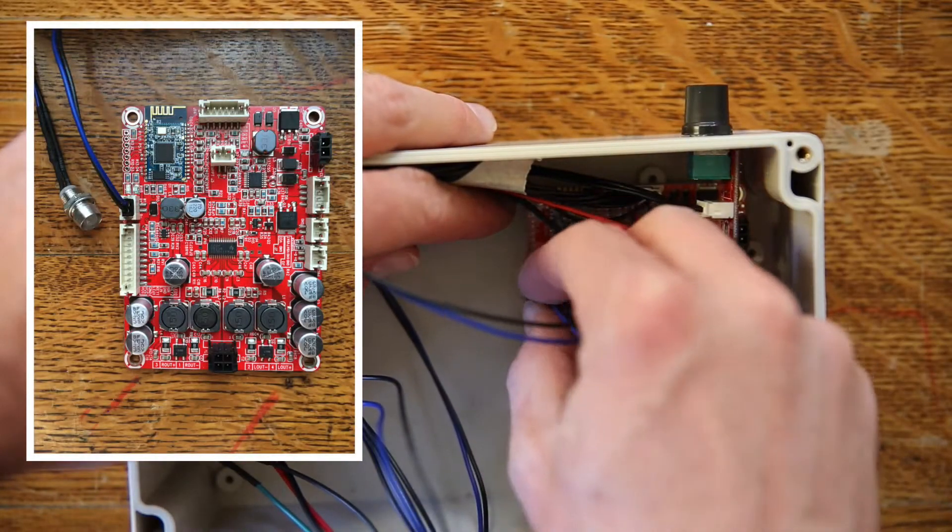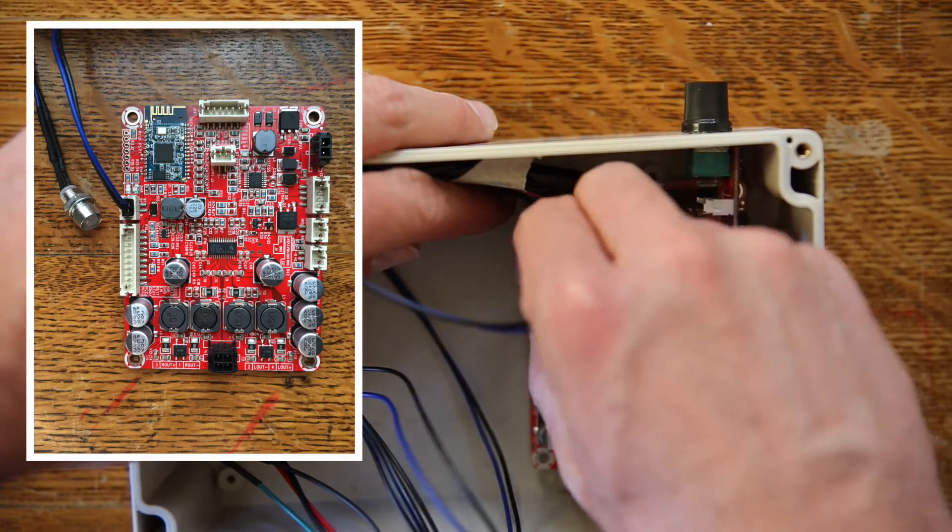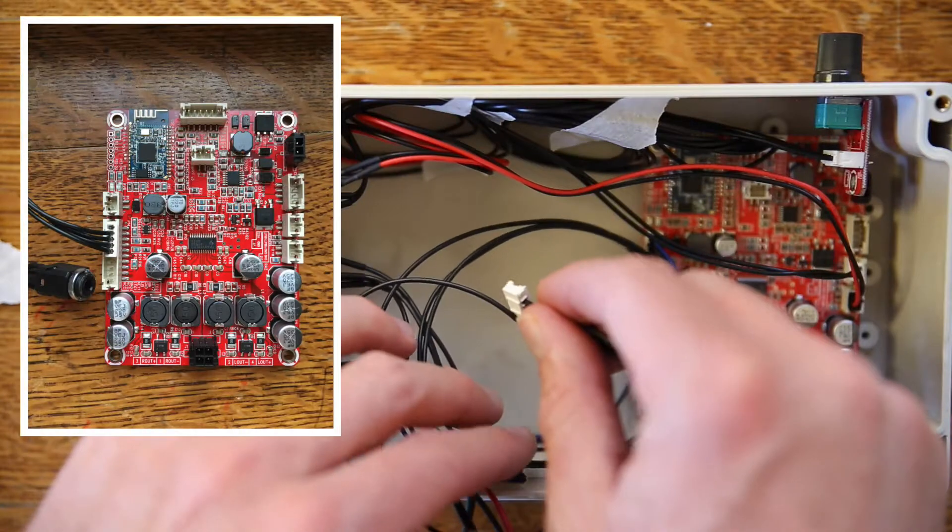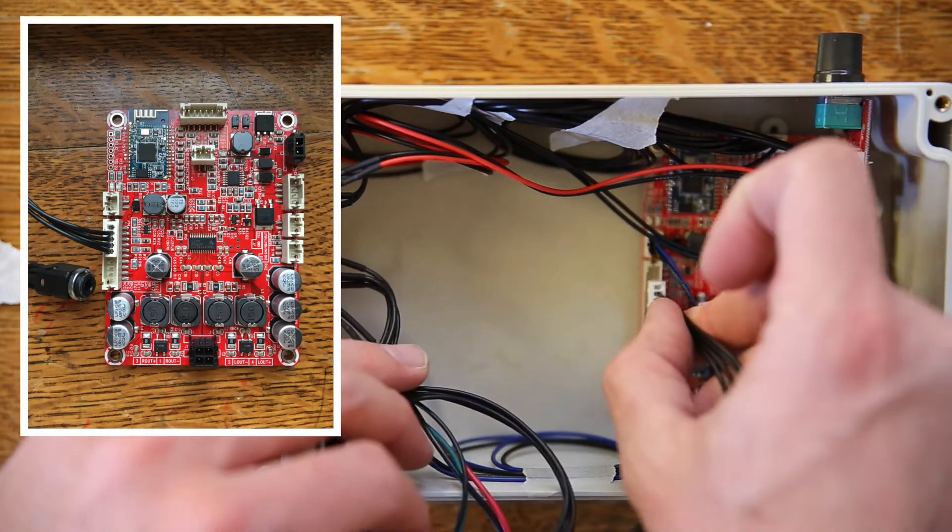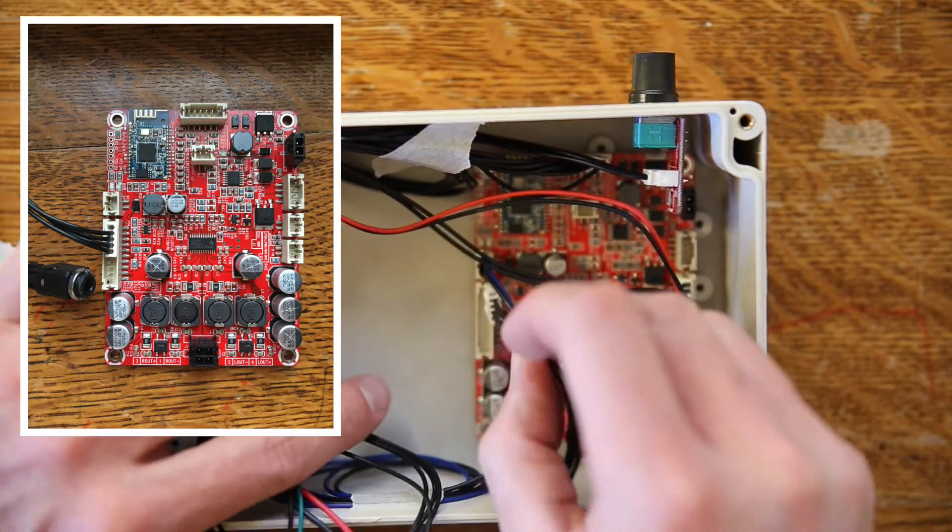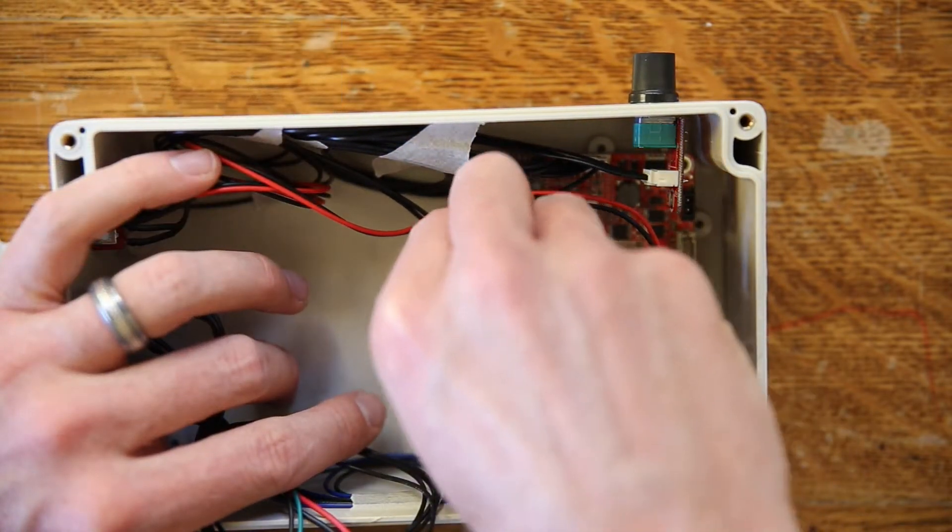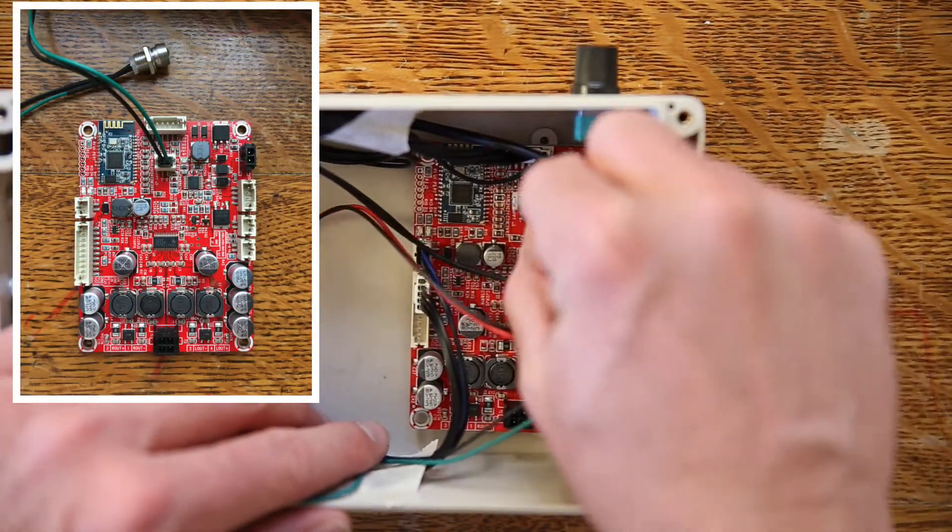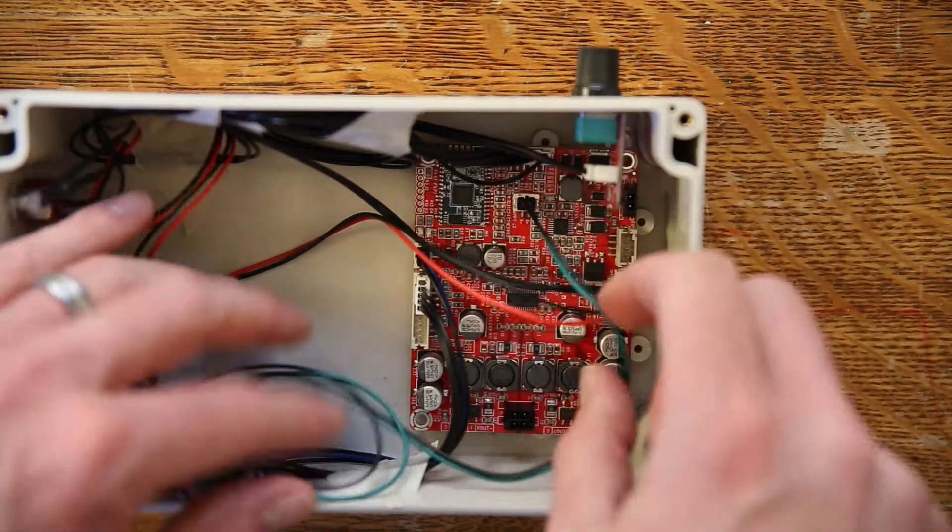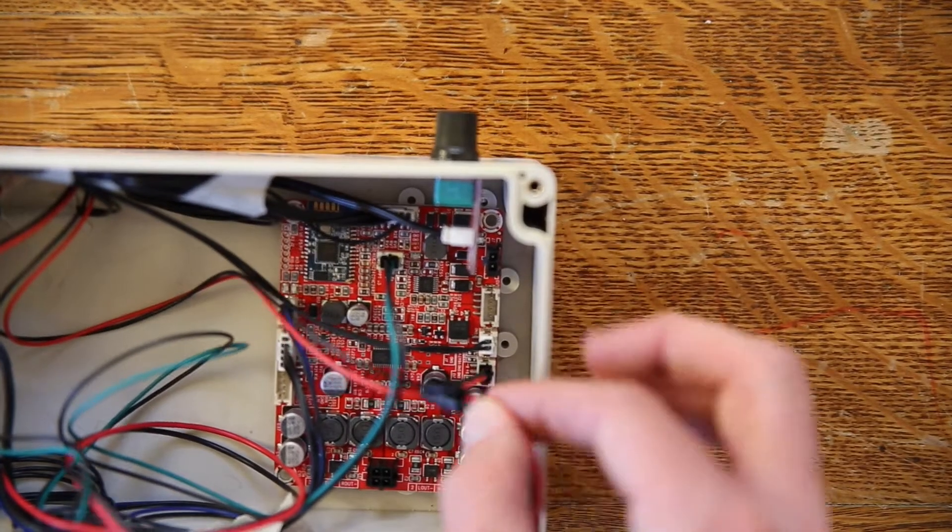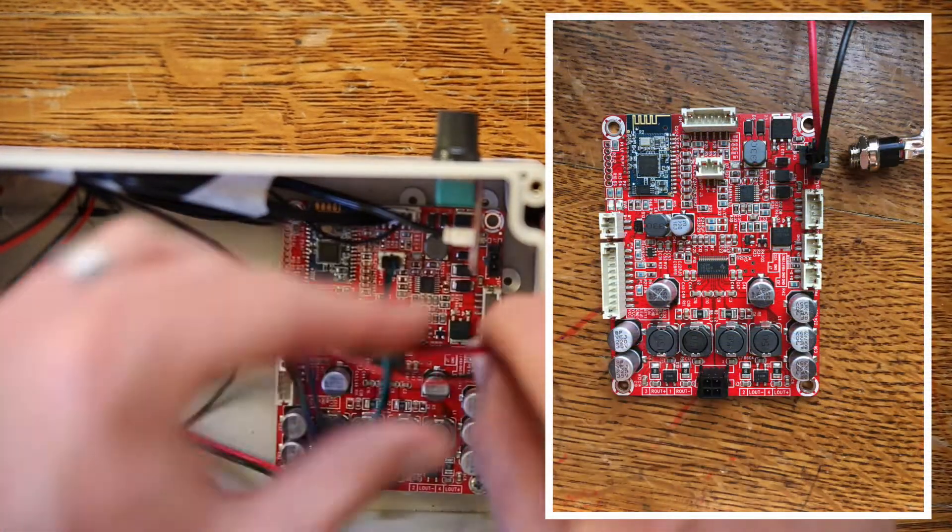Then we'll do the blue LED, which signals the Bluetooth status. The 3.5mm connector is next. Just make sure you follow the diagram carefully. Next is the green LED, which is the charging status, and then the power supply connector. It's got a clip that faces the left side of the circuit board.